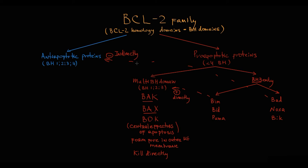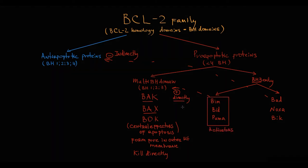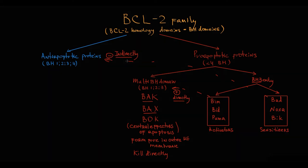According to this principle, BH3-only proteins are divided into activators — which directly activate BAX and BAK proteins (it's BIM, BID, and PUMA proteins) — and sensitizers, which help BAX and BAK proteins indirectly by inactivating anti-apoptotic proteins (it's BAD, NOXA, and BIK proteins).